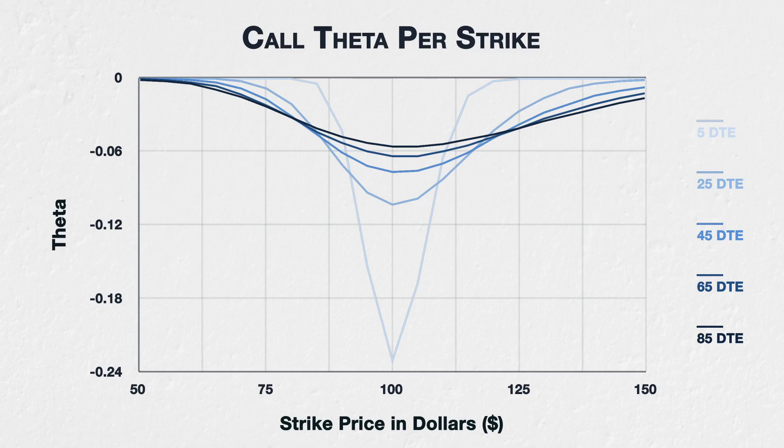We can see here that time has a different effect on an option's theta, depending on where the option's strike price is relative to the underlying price. For options that are either deep in the money or deep out of the money, as time passes and the days to expiry decreases, theta decreases. How far away from the current price they need to be to see this effect can vary depending on both time and volatility. In this example, this is true for the strikes $75 and below, and for strikes $130 and above.